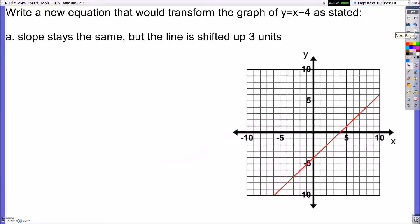It says write a new equation that would transform the graph y equals x minus 4 as stated. So we're going to use y equals x minus 4 as a baseline and we're going to translate the line. I drew a little graph here for a reference. You don't need to look at that, but it will visually help you with it.